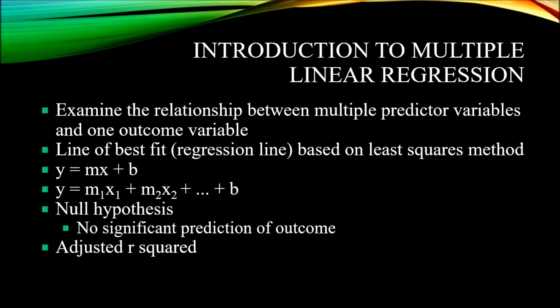If we think of this in terms of regression, y would be the outcome variable and x would be the predictor variable in a simple linear regression. As we consider multiple linear regression, the equation becomes a little more complex. Instead of y equals mx plus b, we have y equals m1x1 plus m2x2, and so on, then we add b. In the case of age, IQ score, and hours of study, we would have three independent variables, so m3x3 would be the last independent variable, and we would just add b after that.